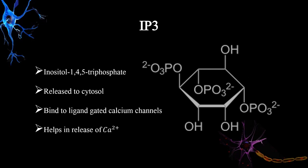The second major lipid secondary messenger is IP3 — inositol-1,4,5-trisphosphate. Unlike DAG, which stays in the plasma membrane, IP3 moves to the cytosol. In the cytosol, IP3 binds to ligand-gated calcium channels, causing them to open and releasing calcium ions.